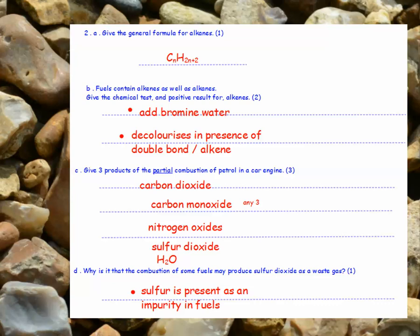Three products of the partial combustion of petrol in a car engine — you could have had carbon dioxide, carbon monoxide, nitrogen oxides, sulphur dioxide, and water. Sulphur dioxide is produced as a waste gas because sulphur is present as an impurity in some fuels.